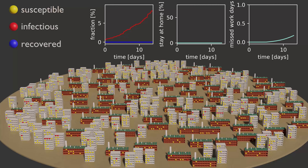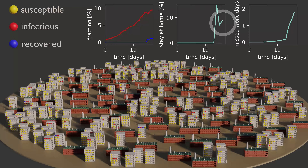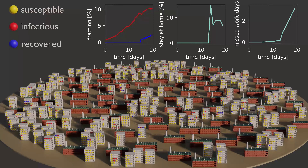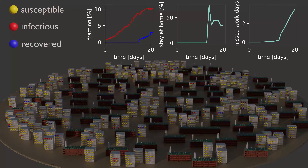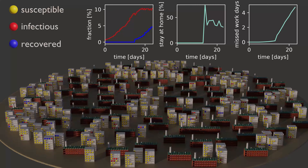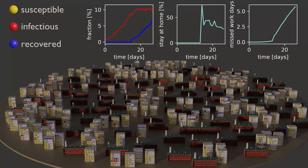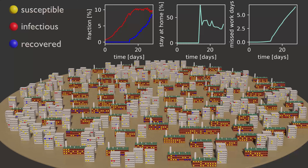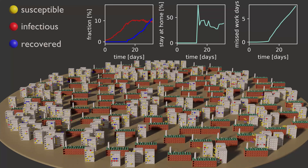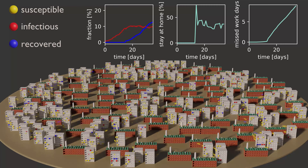14 days into the simulation the government orders marbles to stay at home, but the fraction that needs to stay home is not constant. Instead I implemented a feedback loop with the number of infections occurring each day — whenever fewer marbles get infected the stay-at-home percentage is reduced, and whenever more marbles get infected more are ordered to stay at home. We can see that with this stay-at-home order and feedback loop, the exponential growth of infectious marbles is stopped and it's possible to keep this number at a constant level. However, to keep the virus under control, the fraction ordered to stay at home needs to stay on a constantly high level.